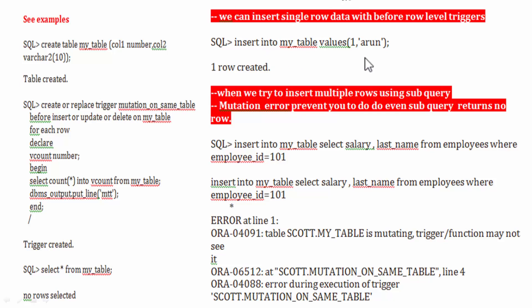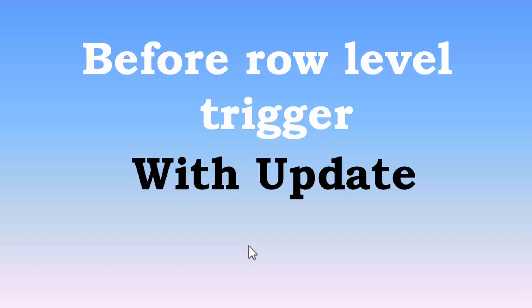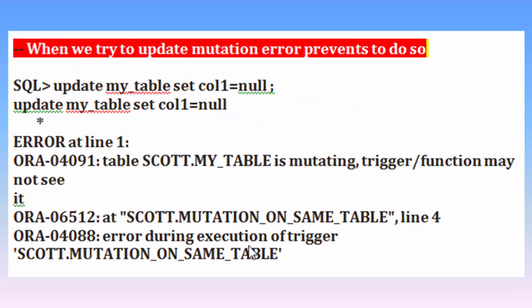When we try to insert a single record, it successfully inserts. When we try to insert multiple records using a sub-query, we get a mutation error (ORA-04091). During insertion, the select statement tries to insert multiple records into my_table, and my_table tries to count how many records are inside itself — in this situation we face the mutation error.